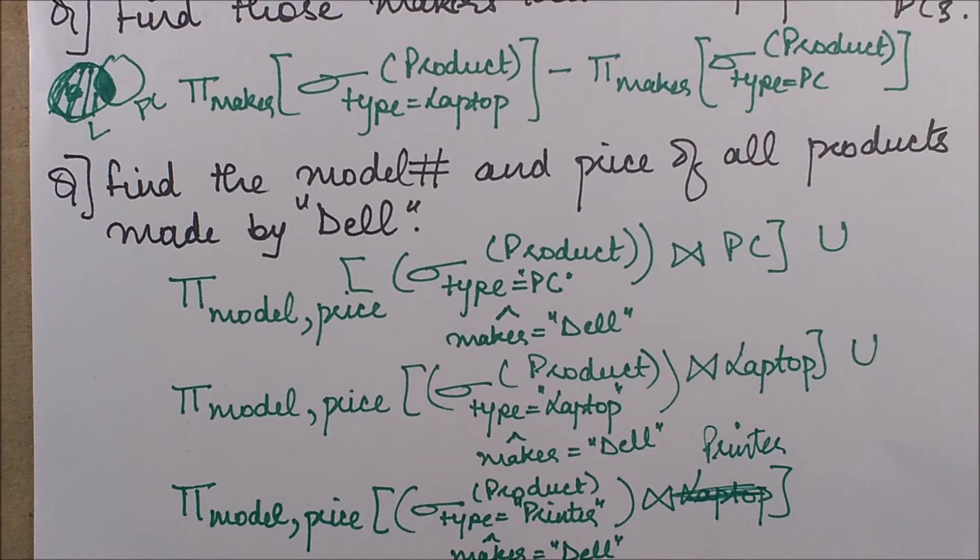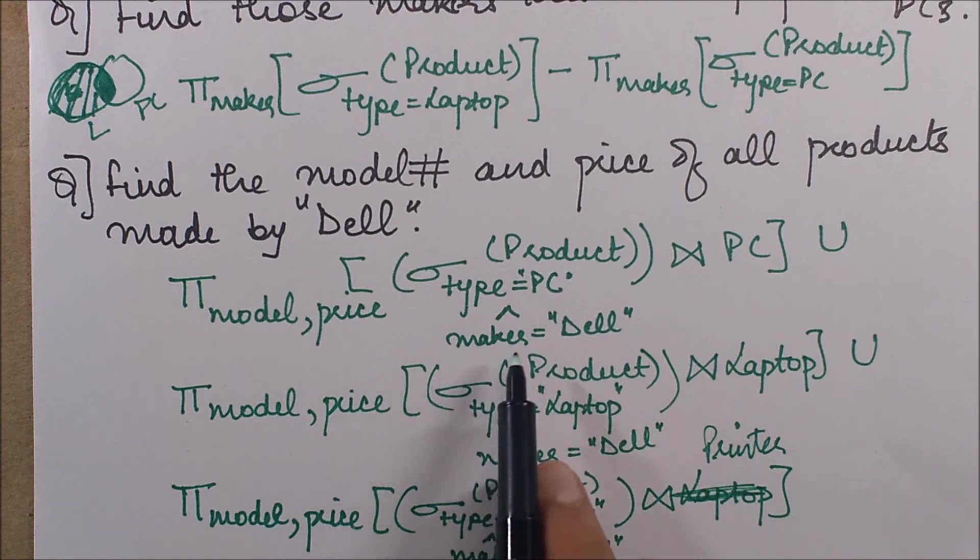And you can only union between tables which have the same number of attributes and the same type of attributes. So the columns and the type of columns should be the same, only then you can perform a union operation. So what we do over here is first of all, we select the products with type PC and maker Dell.